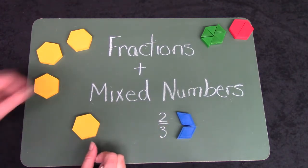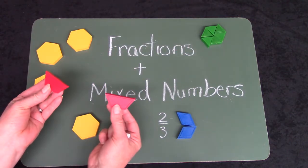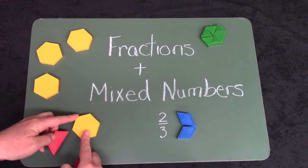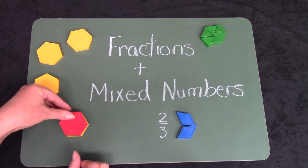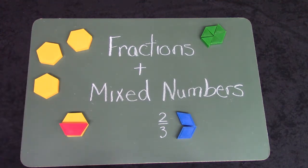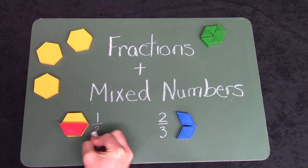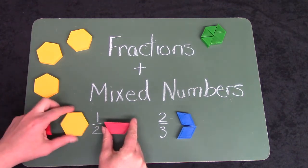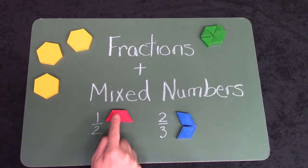Let's take a look here at how many trapezoids it would take to cover one hexagon. It would take two. So if I had one out of the two pieces that I needed, I would have one half or one out of the two pieces.